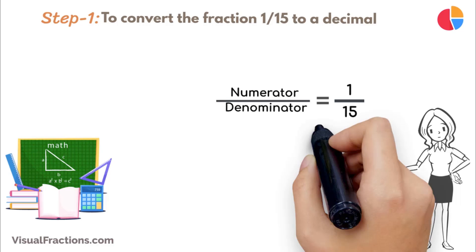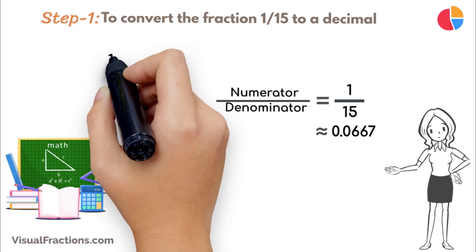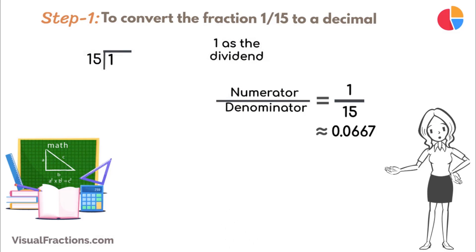Using a calculator, the answer we get is approximately 0.0667. But let's perform this division by hand using long division. Place 1 as the dividend and 15 as the divisor.